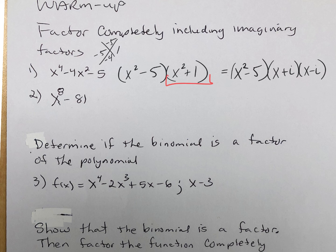If it was x squared plus four, what would it be? It would be (x plus 2i)(x minus 2i). Now number two is a binomial.